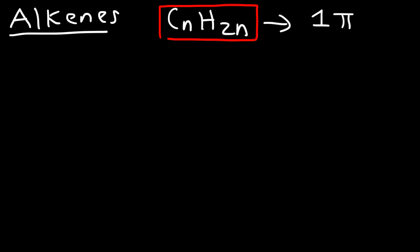Now let's talk about alkenes. Alkenes have the formula CnH2n if they only have one double bond or one pi bond. For each double bond that's found in the alkene, you need to decrease this by 2. So if there's two pi bonds, it's going to be CnH2n minus 2. But if it only has one double bond, this is the general formula for an alkene.